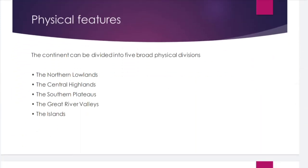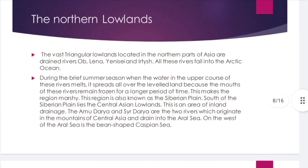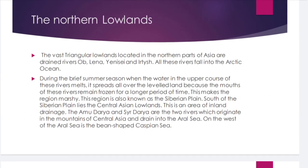There are mainly five physical divisions of Asia: Northern Lowlands, Central Highlands, Southern Plateau, Great River Valleys, and the Islands. The vast triangular lowlands located in the northern part of Asia are drained by rivers Ob, Lena, Yenisei, and others — all of which fall into the Arctic Ocean.